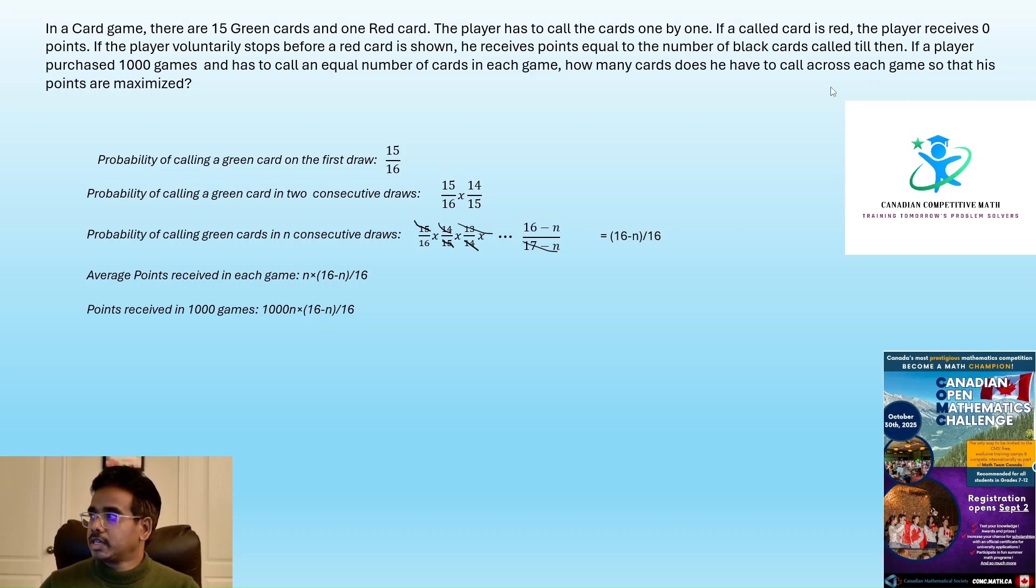So the question here asks that he has to maximize his points here. So we have to maximize 1000 times n times 16 minus n by 16. So if we just simplify this, we will get 62.5 times n times 16 minus n. So we need to maximize 62.5 times n times 16 minus n. Since 62.5 is a constant, so the maximum of this expression is maximum of n times 16 minus n.